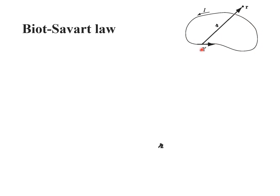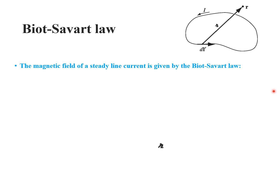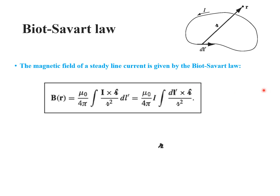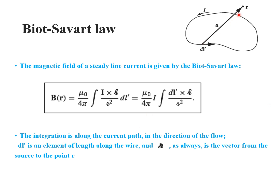The Biot-Savart law for a current-carrying loop or wire: if we want to get the magnetic field at a distance r and take a very small line segment dl', then the magnetic field is given by B = μ₀/4π ∫ (I × r̂)/r² dl', which can also be written as μ₀/4π ∫ (dl' × r̂)/r². The integration is along the current path.